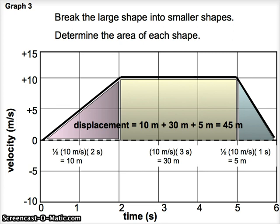And I would find that the areas are 10 meters, 30 meters, and 5 meters. So that the total displacement is 45 meters. Now again, if the question had asked about distance traveled, that would also be 45 meters. Because this object only goes in the positive direction. All values of v are positive on this graph.